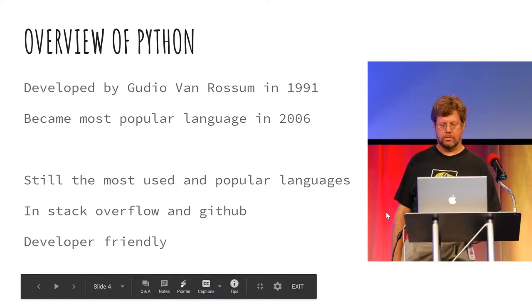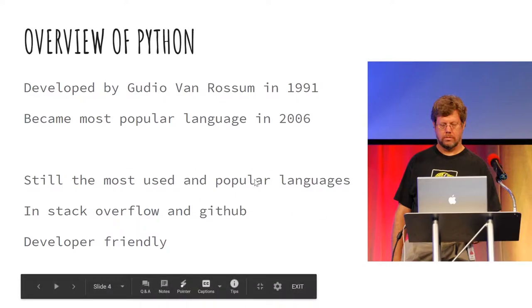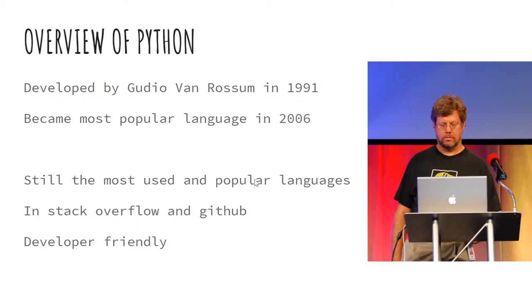Python became popular in 2006 as many tech giants such as Google and NASA implemented it on their own systems. Python is still the most popular and most used language in the entire world — every company uses Python.